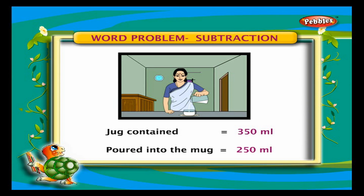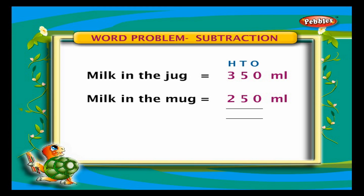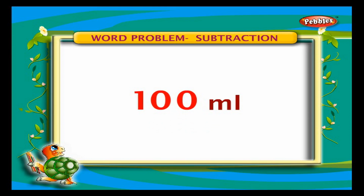Word problem — Subtraction: A jug contained 350 ml of milk. Out of this, 250 ml was poured into a mug. How much milk is left in the jug? Milk in the jug = 350 ml. Milk in the mug = 250 ml. Subtract ones — we get 0. Subtract tens — we get 0. Subtract hundreds — we get 1. The milk left in the jug is 100 ml.